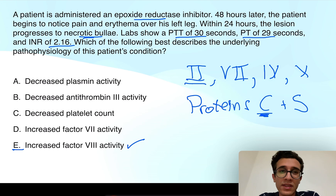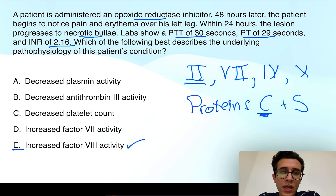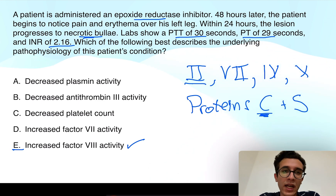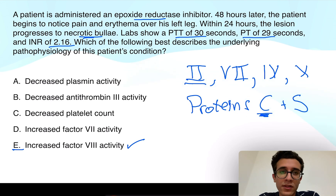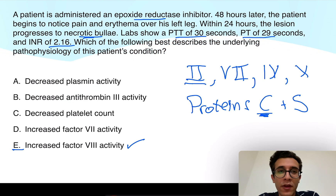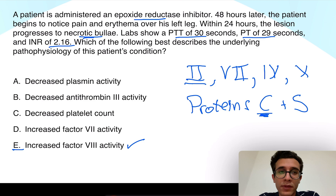You reach the conclusion that protein C is depleted before the coagulation factors because it has a shorter half-life, putting the patient in a hypercoagulable state. Since decreased protein C is not an answer choice, think one step forward: what's the function of protein C? It inhibits factors 5 and 8. So now that we no longer have this inhibition, we'll have increased activity of factors 5 and 8.